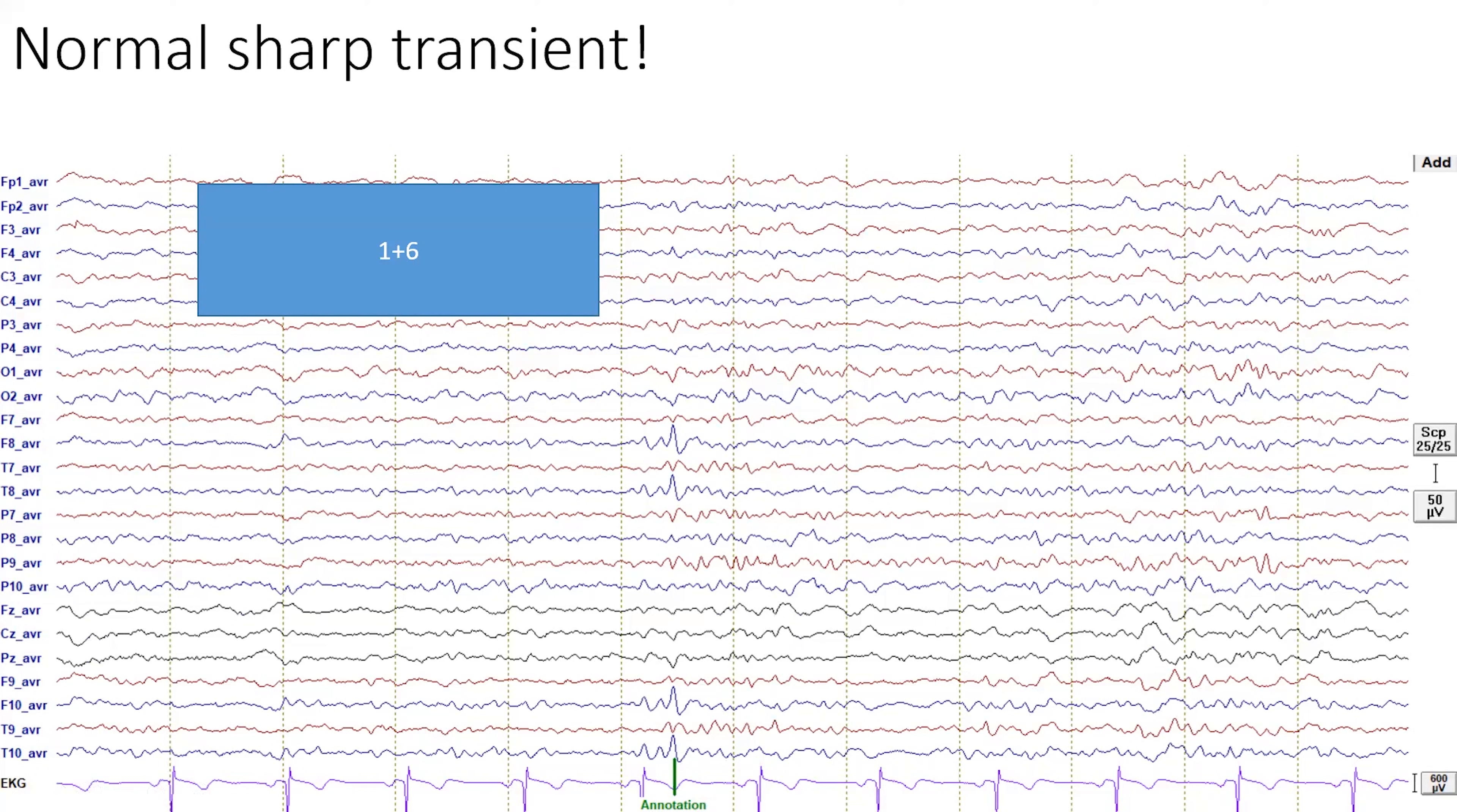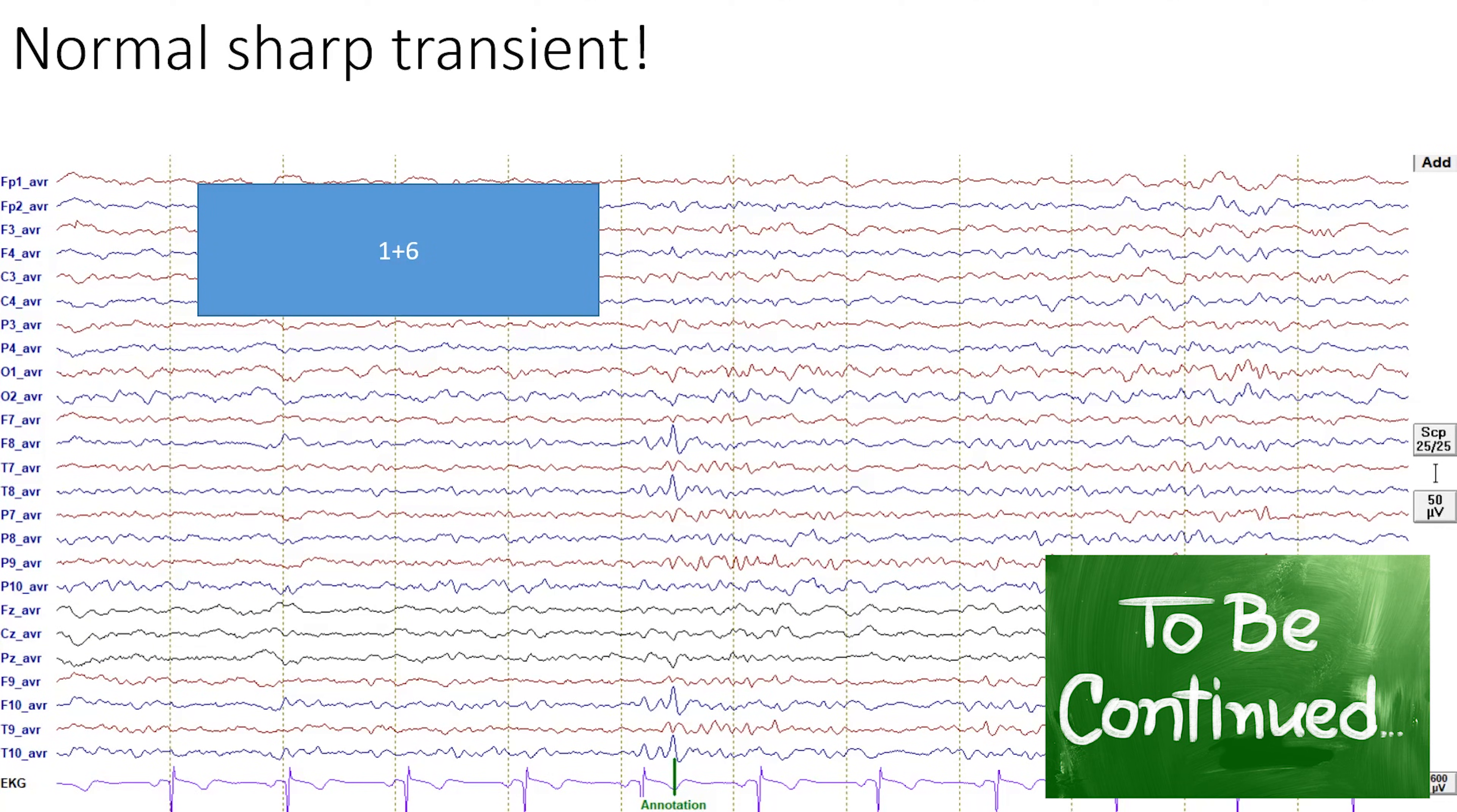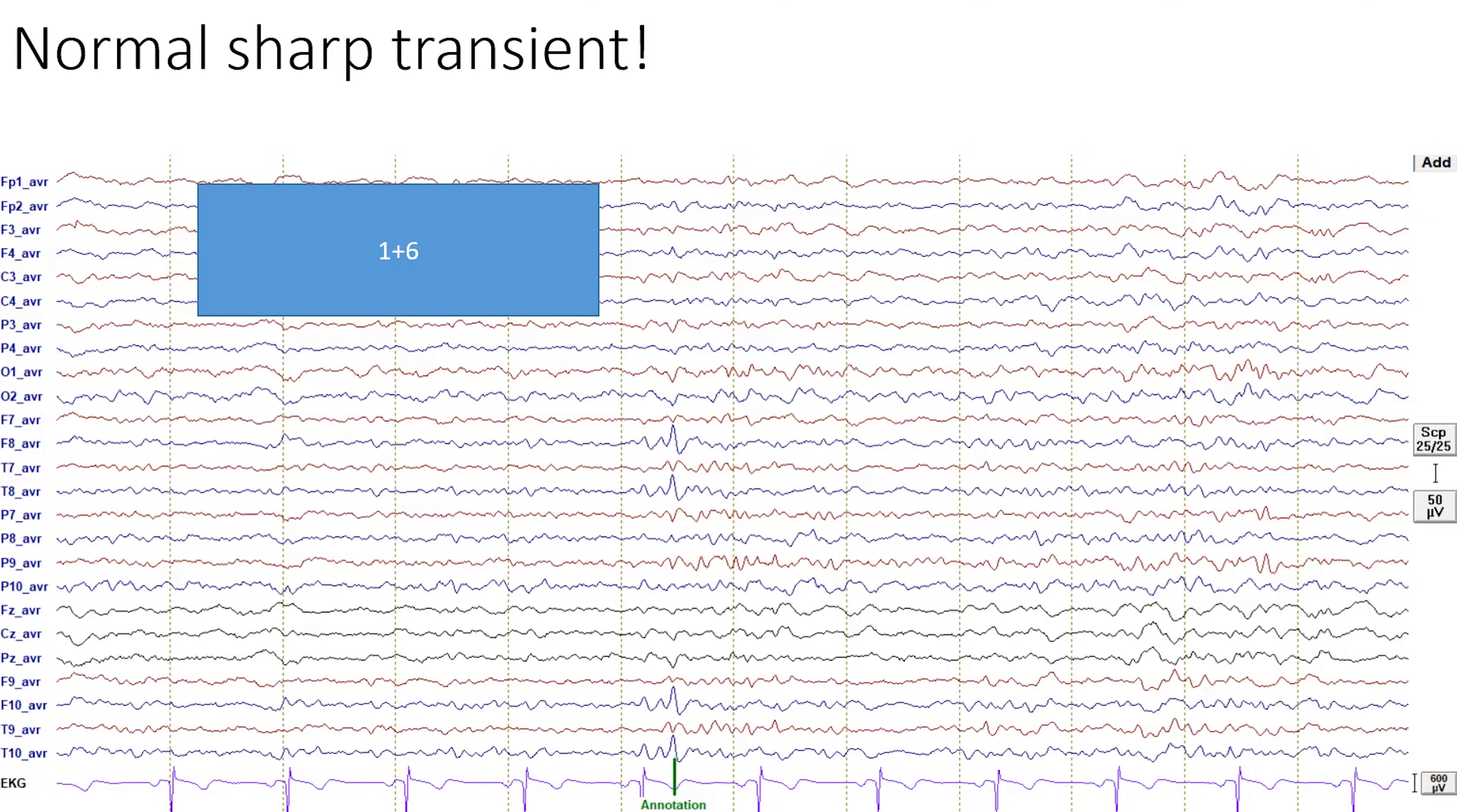Okay. But what is it though? Yeah. It's a pop-up of the background activity. And actually many papers from Salim Benbadis and Bill Tatum show that actually this is the normal variant which is most guilty for over-reading EEG. So you can call it a wicked wave. It's not the wicked rhythm because it's just one wave. This is the most common cause of over-reading EEG. Interesting.